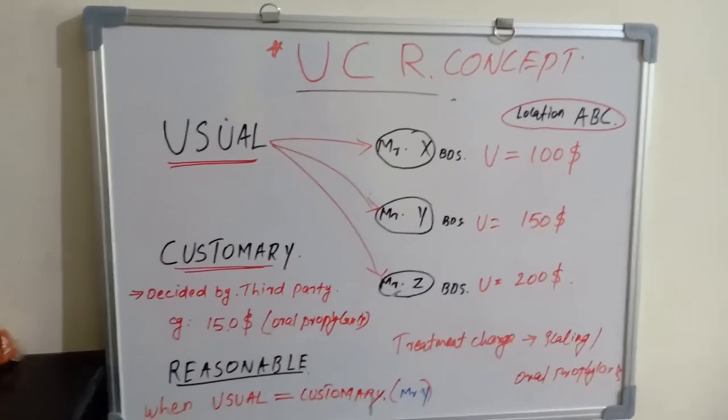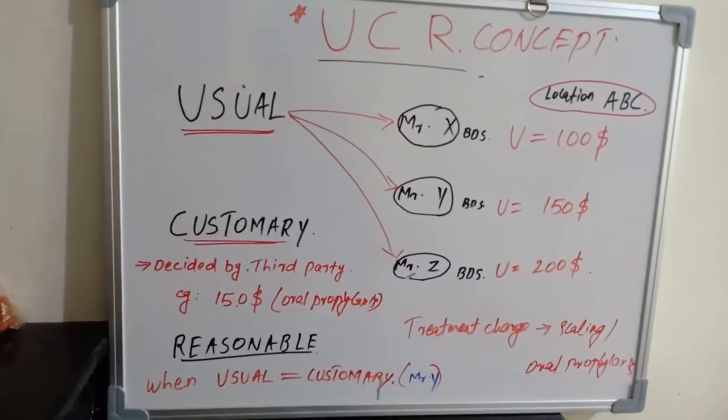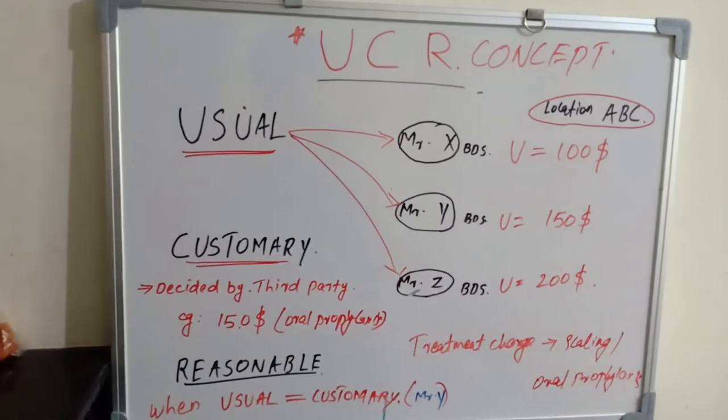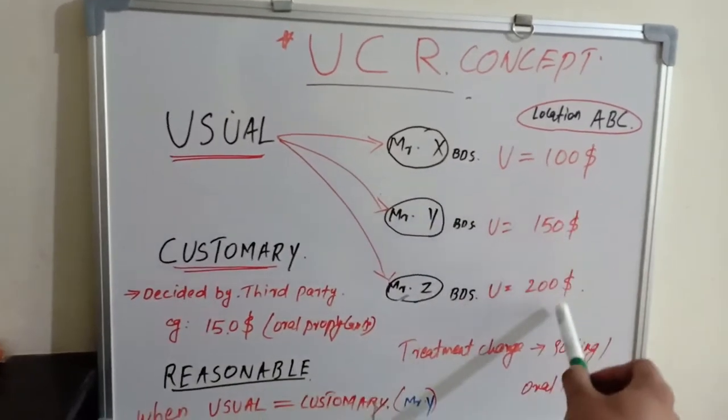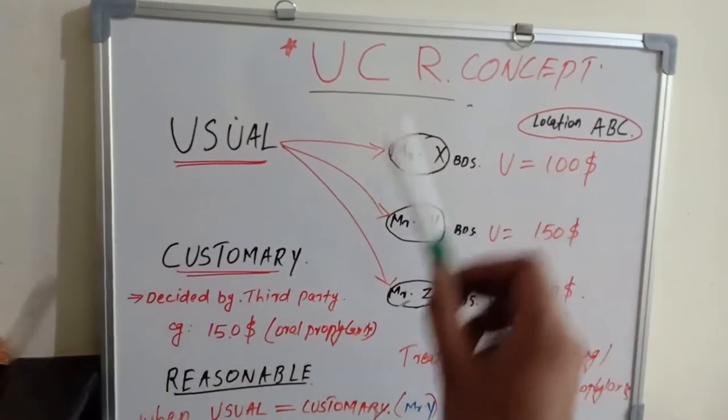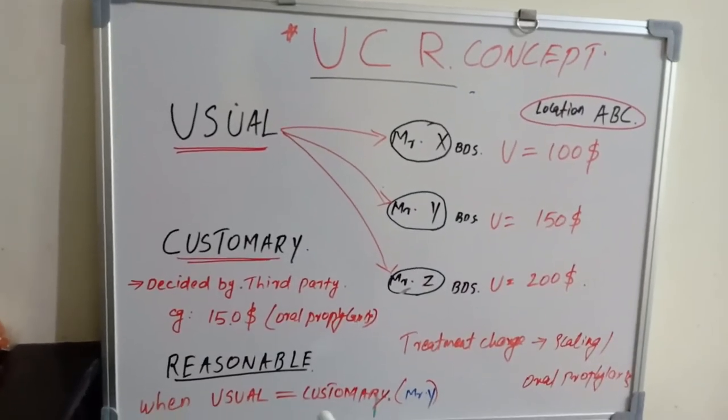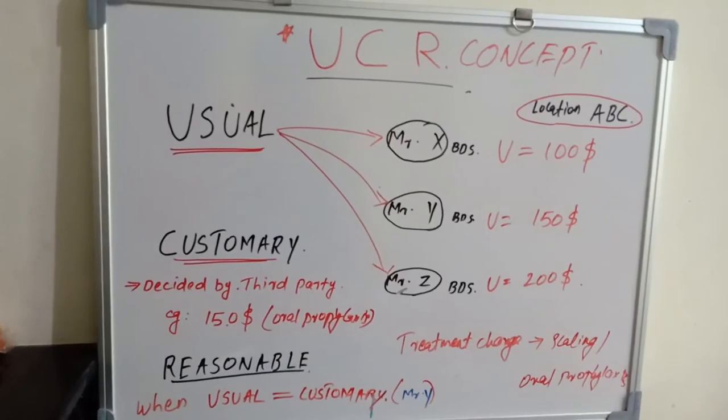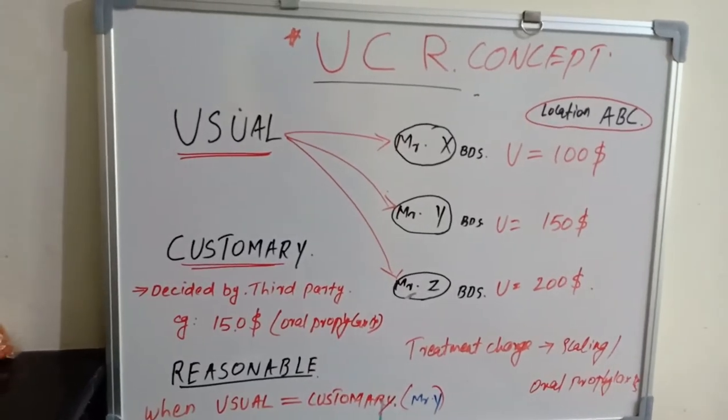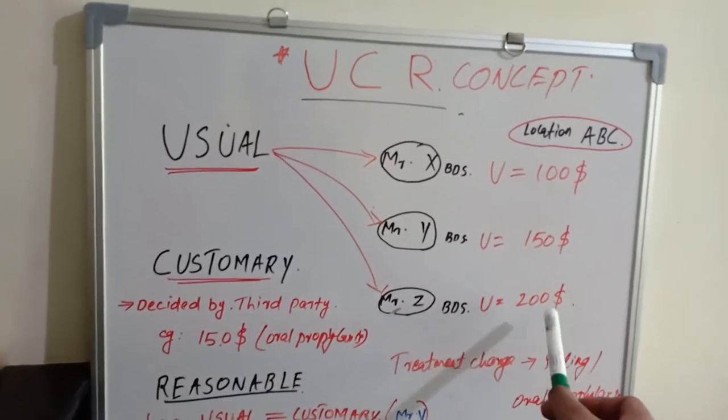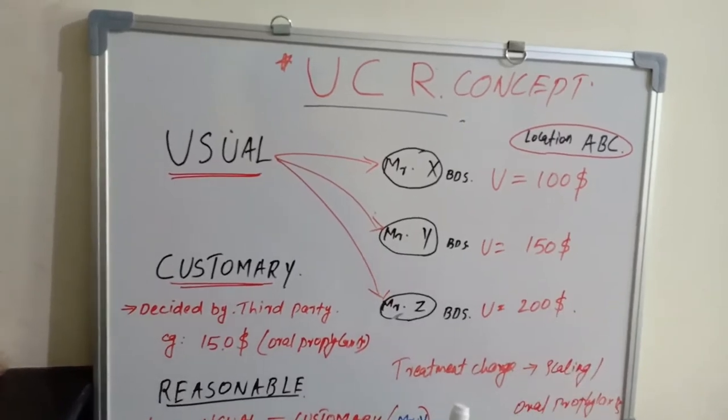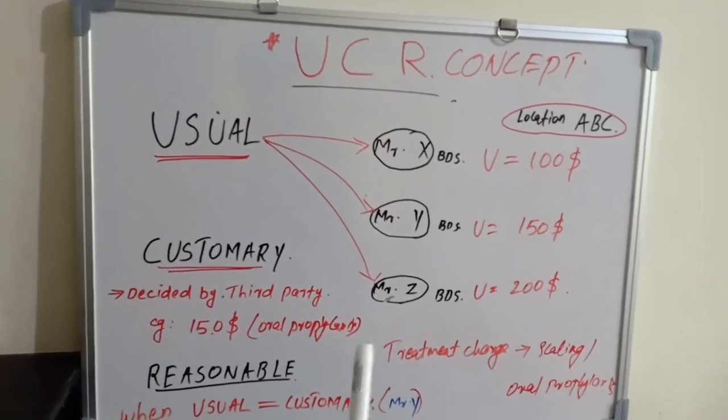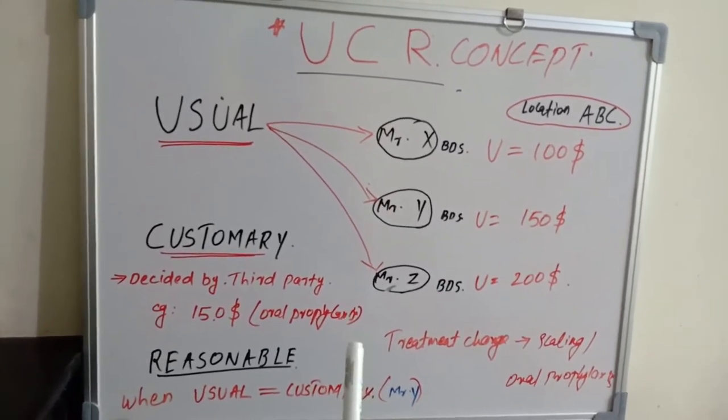And Mr. Z charges $200. The UCR concept works like this: the usual fee of these three people will be taken up by the third party and they calculate a customary fee which is customer-friendly. Even if you charge $250 or $300, there will be a customary fee calculation by the third party. They decide how much you can ask from the patient.